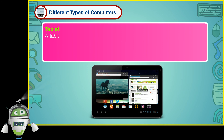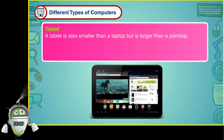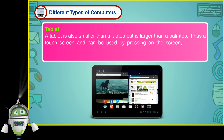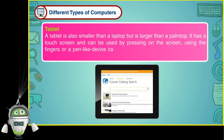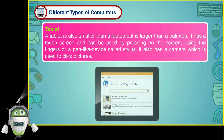A tablet is also smaller than a laptop but is larger than a palm top. It has a touch screen and can be used by pressing on the screen using the fingers or a pen-like device called a stylus. It also has a camera which is used to click pictures.